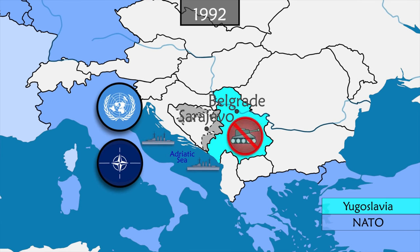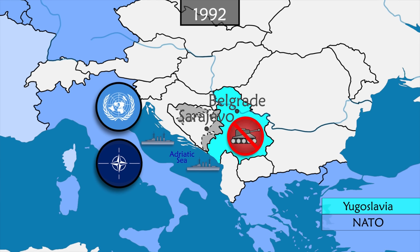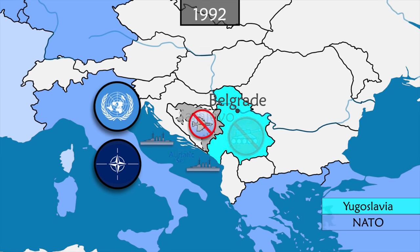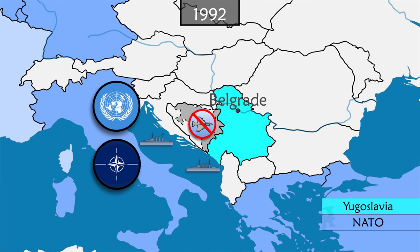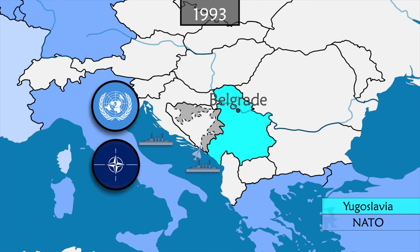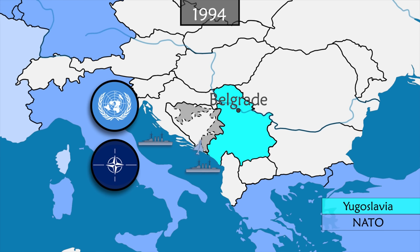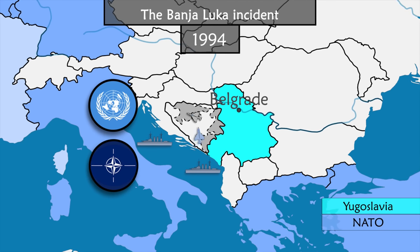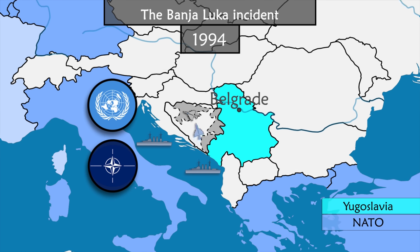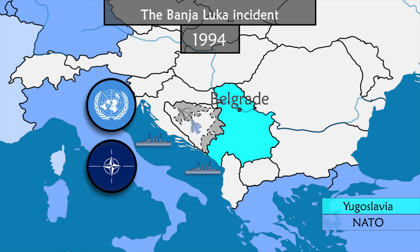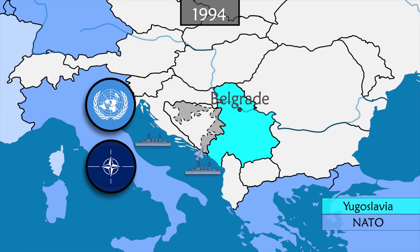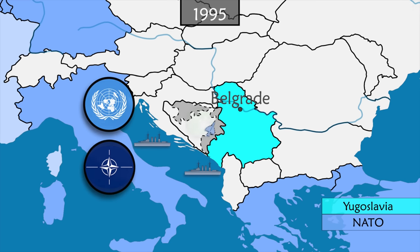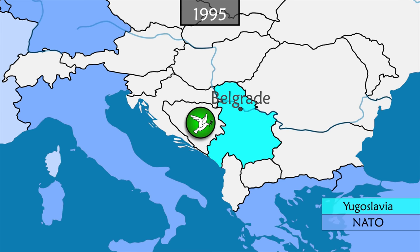The UN asks NATO to patrol the Adriatic Sea to enforce an arms embargo against Yugoslavia, which is supporting the Bosnian Serb minority. The UN then passes a resolution to create a no-fly zone over Bosnia-Herzegovina, and the NATO air force is tasked with patrolling to enforce it. On February 28, 1994, six Serbian planes are spotted in the exclusion zone bombing a military factory. Forty-five years after its creation, NATO engages in its first combat and shoots down four planes. The following months, NATO begins bombing campaigns against Bosnian Serb forces, intensifying until the signing of a peace treaty on December 14, 1995.